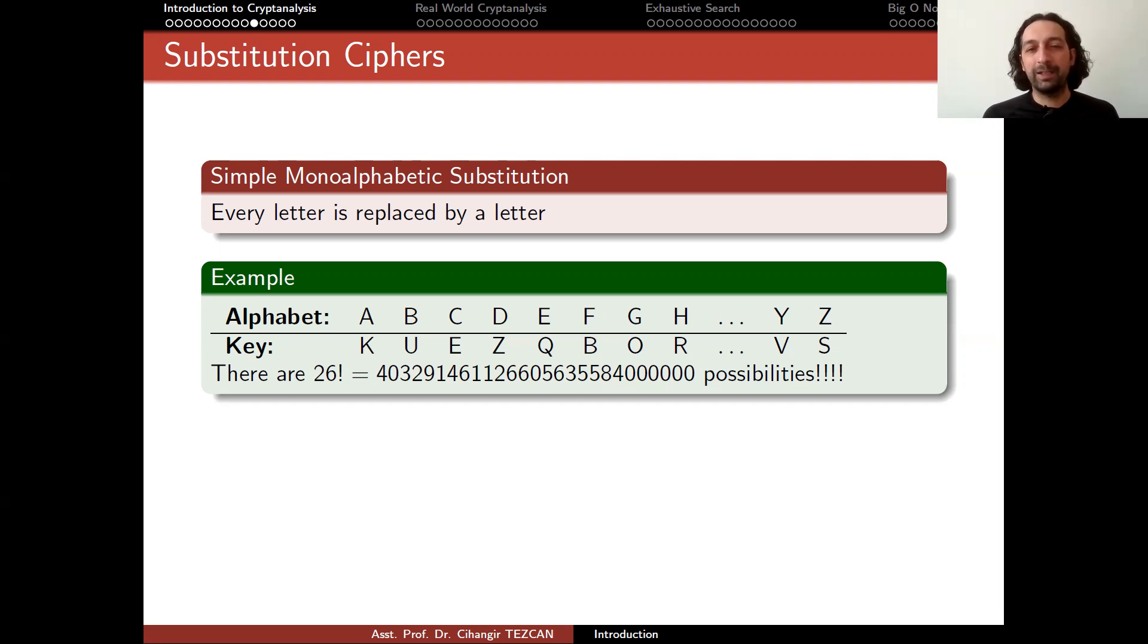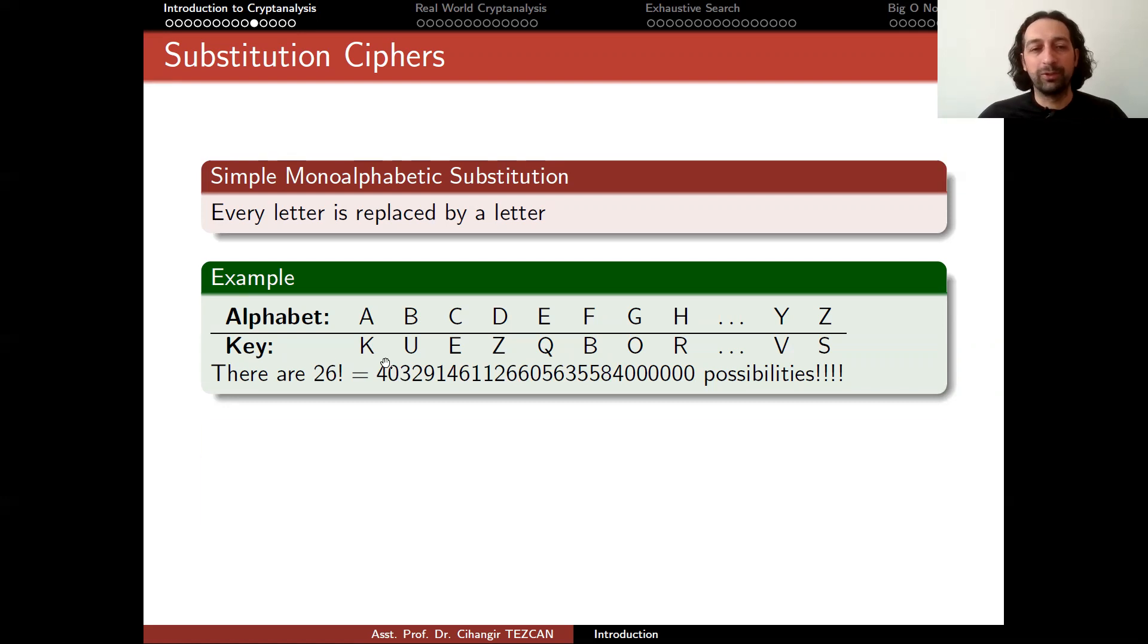So question is, if it is that good, why we are not using it today? So this is actually used even in the First World War, but broken maybe hundreds of years ago. So as you can see, since we cannot break it with a brute force, we have to perform some cryptanalysis here. We have to find a weakness and then we have to exploit it to break the cipher.